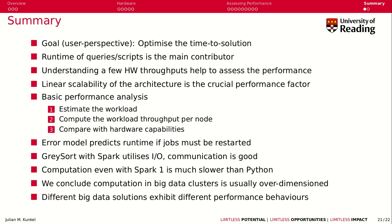Understanding the hardware throughput and behavior helps to assess the performance, and we can start with very simple models that you learned as part of this lecture. Linear scalability of the architecture is a crucial performance factor — it is much more important to have a good software architecture that you can scale out easily than programming in C versus Java, for example, where you save only a little bit of performance.